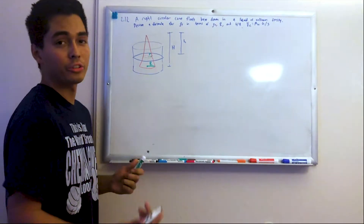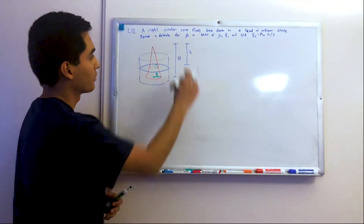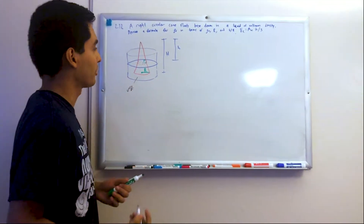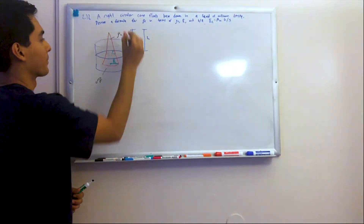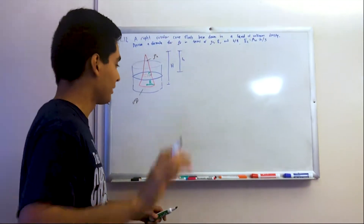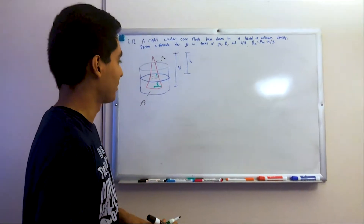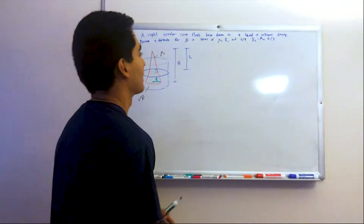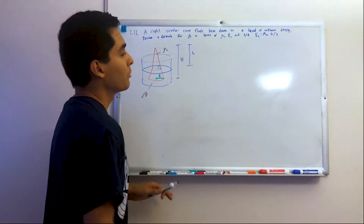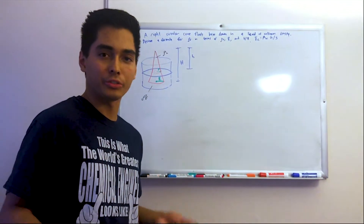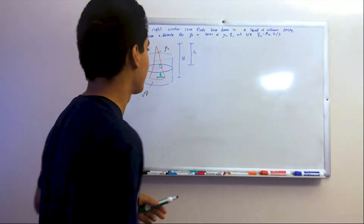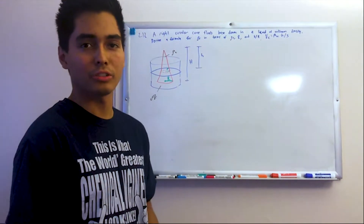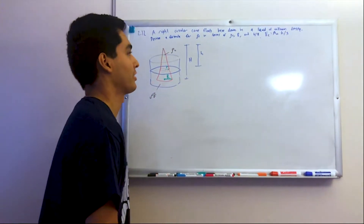We have to derive a relationship for rho of the fluid as a function of rho of the cylinder. We're finally out of that horrendous unit conversion territory, at least for now. I recommend you try this by yourself and see what you can get.